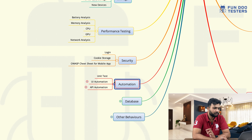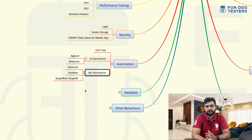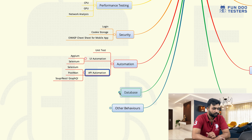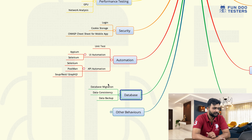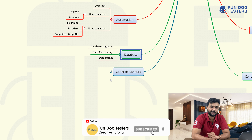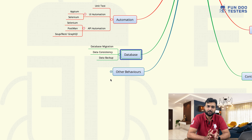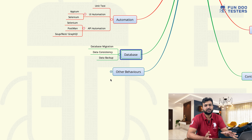Later on, automation. Automation includes UI automation and API automation. For Android application, we can use Appium as a UI automation tool. And database testing — in database testing, it comes under different categories like data migration, data consistency, and data backup. These all things fall under the database tester who is working on the database.